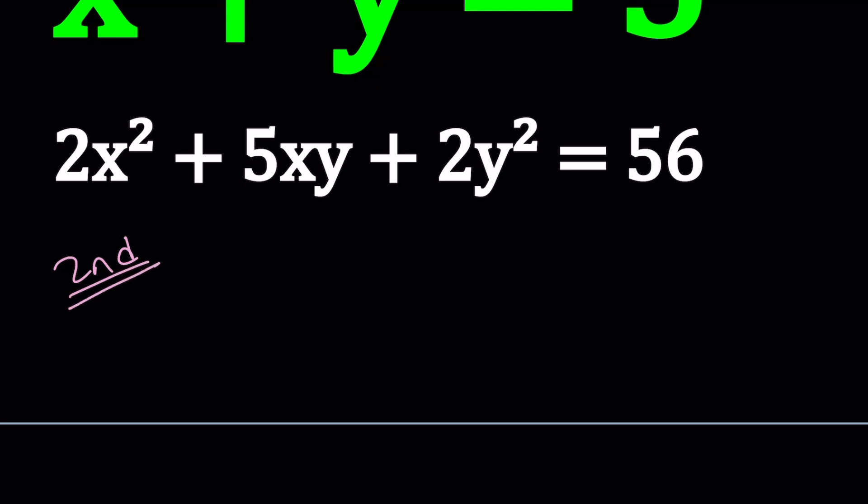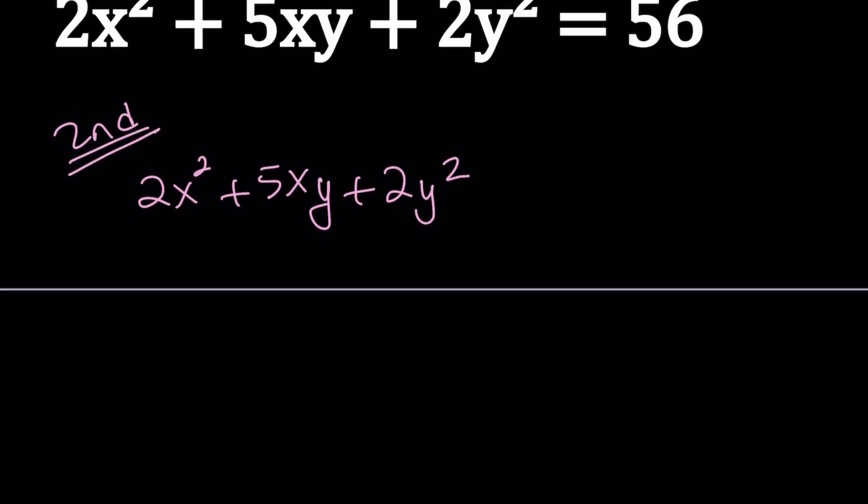Alright, so for my second method, I'm going to go ahead and take the quadratic and factor it because it's factorable. Now, how do we factor quadratics? If you look at the coefficients 2, 5, and 2, here's what we do first. Multiply the 2 and the 2, that gives us 4, and that's called the product. And 5 is called the sum.